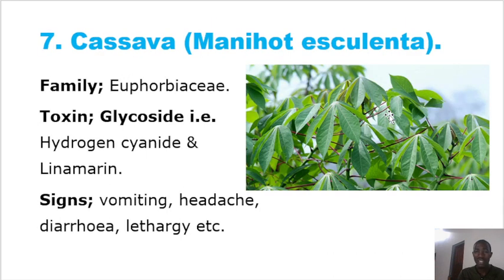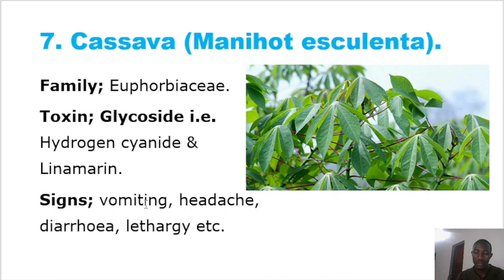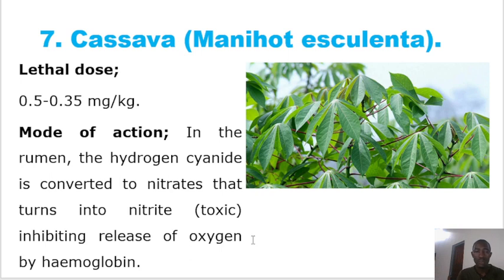Another common toxic plant is cassava, botanically known as Manihot esculenta, in the family Euphorbiaceae — the same family as Euphorbia and castor bean. The toxins are cyanogenic glycosides, specifically hydrogen cyanide and linamarin. The mode of action is that hydrogen cyanide combines with hemoglobin and inhibits the release of oxygen. Clinical signs include vomiting, headache, diarrhea, and distress. Note that ruminants do not vomit. The lethal dose is 0.5 to 0.35 mg/kg.